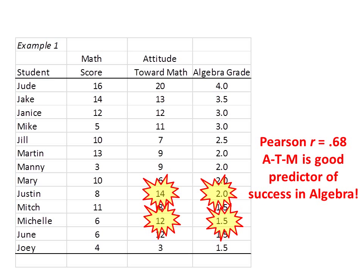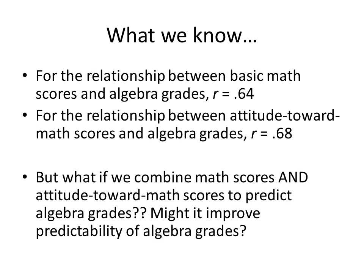When we calculate the Pearson R for this relationship, the Pearson R is 0.68, which basically suggests that attitude toward math is a good predictor of success in algebra. So for the relationship between basic math scores and algebra grades we have a Pearson R of 0.64, and for the relationship between attitude toward math scores and algebra grades we have a Pearson R of 0.68.